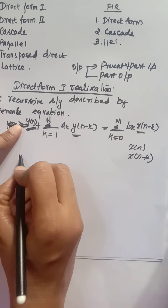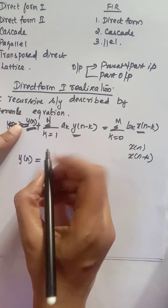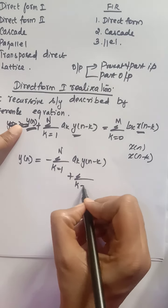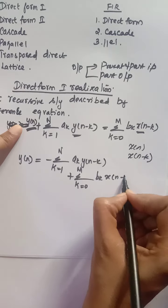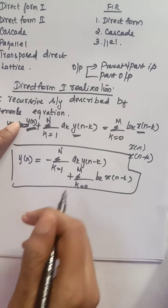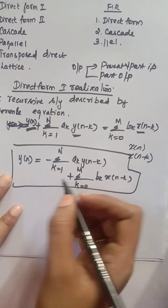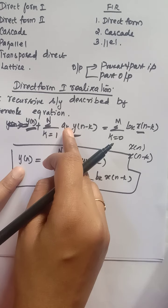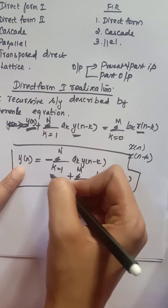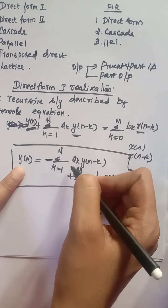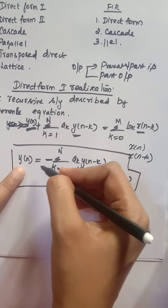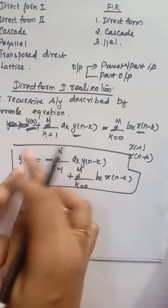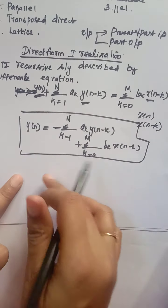Similarly, past output is represented by y(n-k). To obtain y(n), we write: y(n) = minus summation k=1 to N of a_k * y(n-k), plus summation k=0 to M of b_k * x(n-k). This is the difference equation relating the input and output of an IIR filter. The reason for the minus sign is that y(n) belongs to that summation where k starts from 1, not 0.